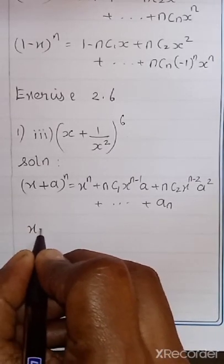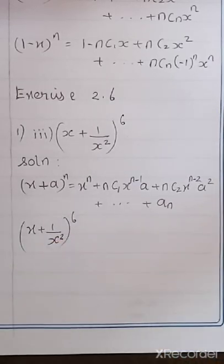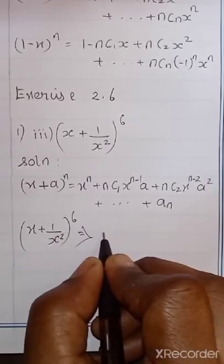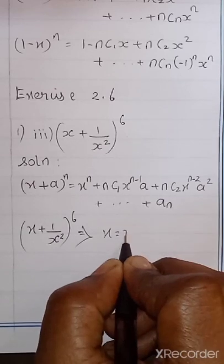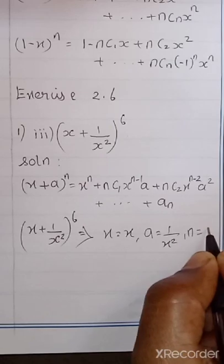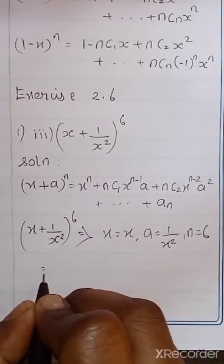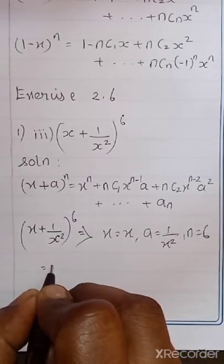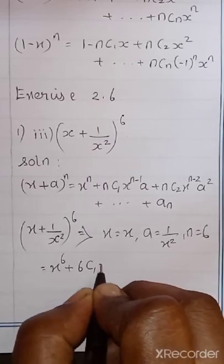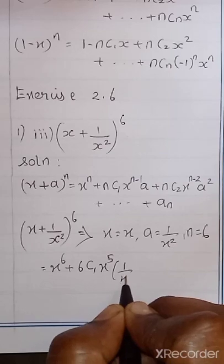Here, X plus 1 by X squared, whole power 6. What is your X term? X. What is your A term? 1 by X squared. What is your N value? 6. Now substitute: the expansion begins with X power 6, then 6C1 X^5 into 1 by X squared...